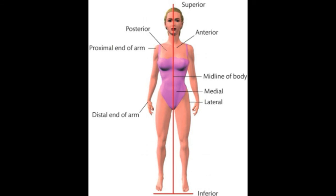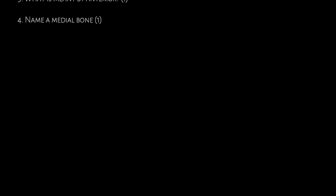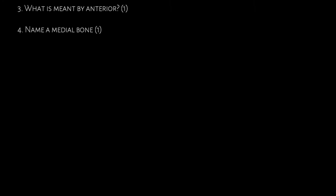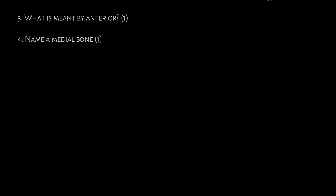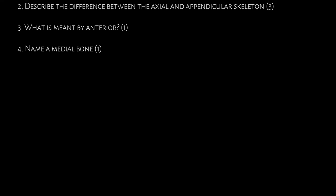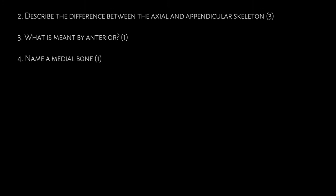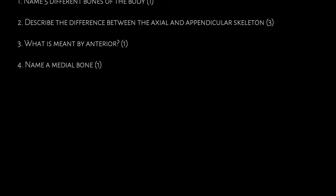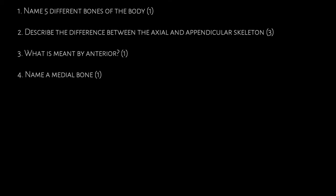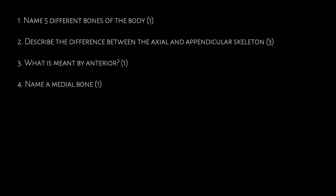Let's try some questions using the knowledge we've covered. First, name five bones of the body — you've got 205 to pick from, but in BTEC Sport we focus on around 18. Second, can you describe the difference between the axial and the appendicular skeleton? That might be a three-mark question. Third, what is meant by anterior? And fourth, name a medial bone. Answers coming up very soon.